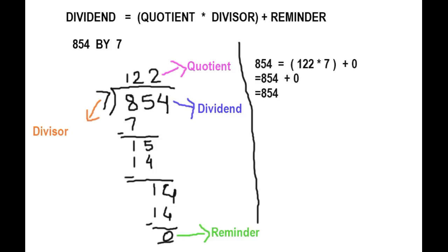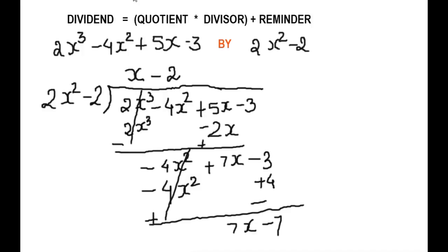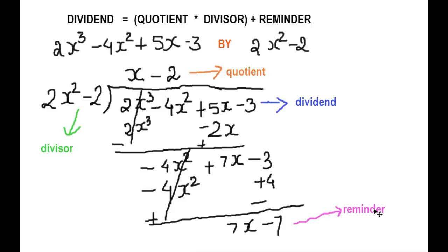Now come to the polynomial function. 2x cubed minus 4x squared plus 5x minus 3, divided by 2x squared minus 2. And this was our solution. Now put all the values into the formula and get the result.